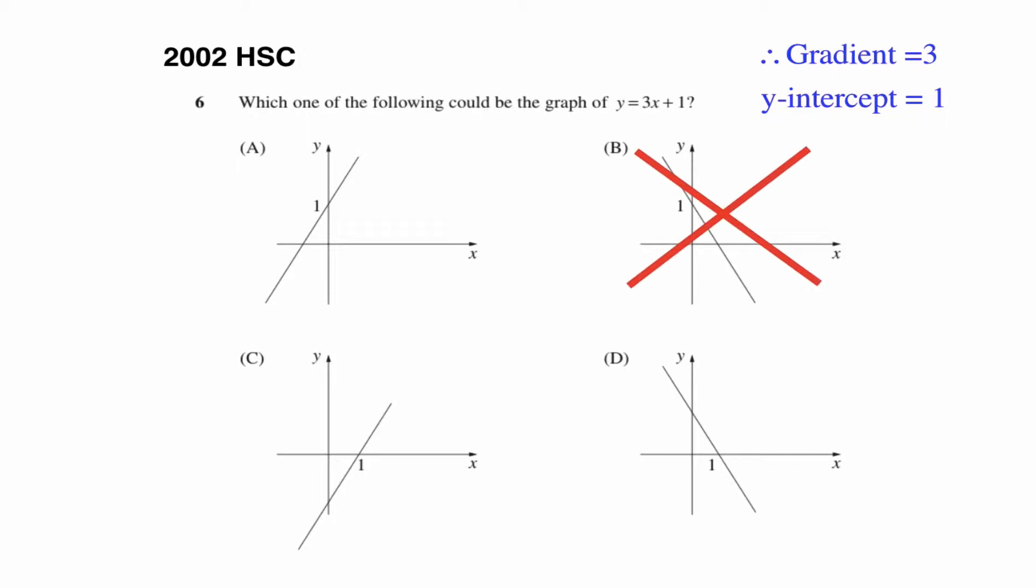So straight away we can eliminate b because that has a negative gradient, as does d. And then we can eliminate c because it has a y-intercept that is negative, leaving us with the fact that a is the correct answer for that question.